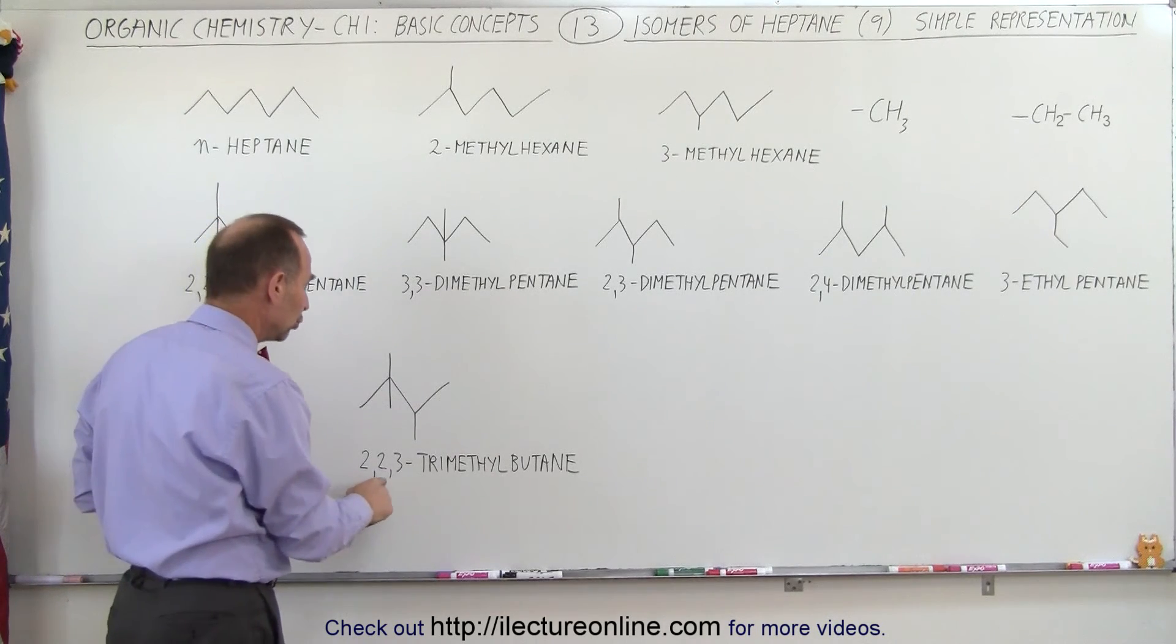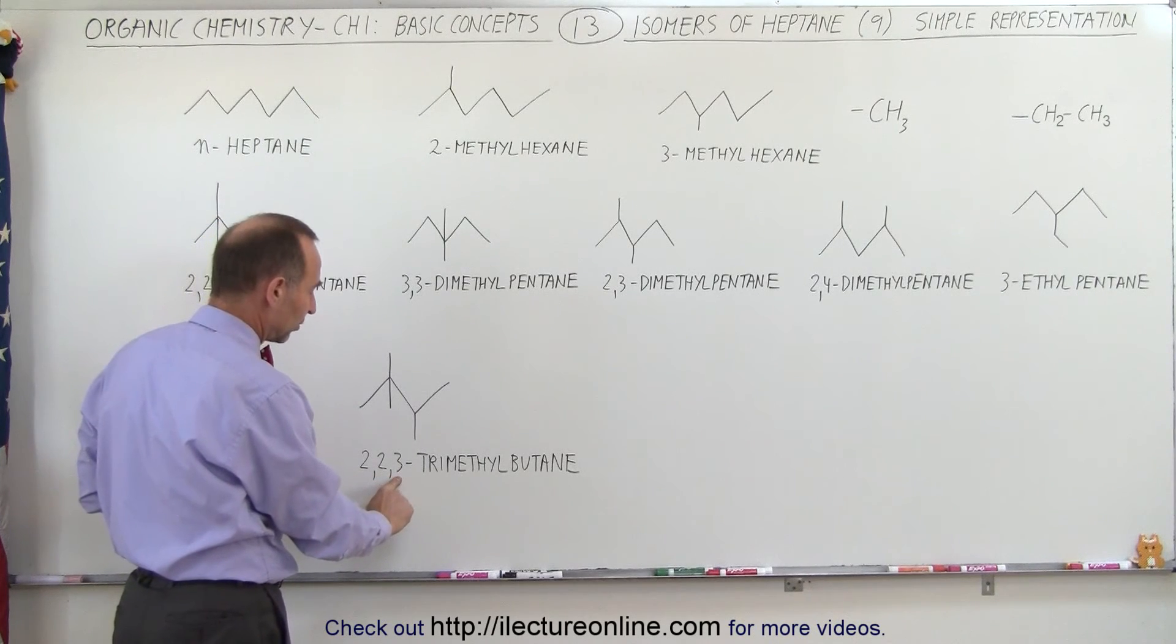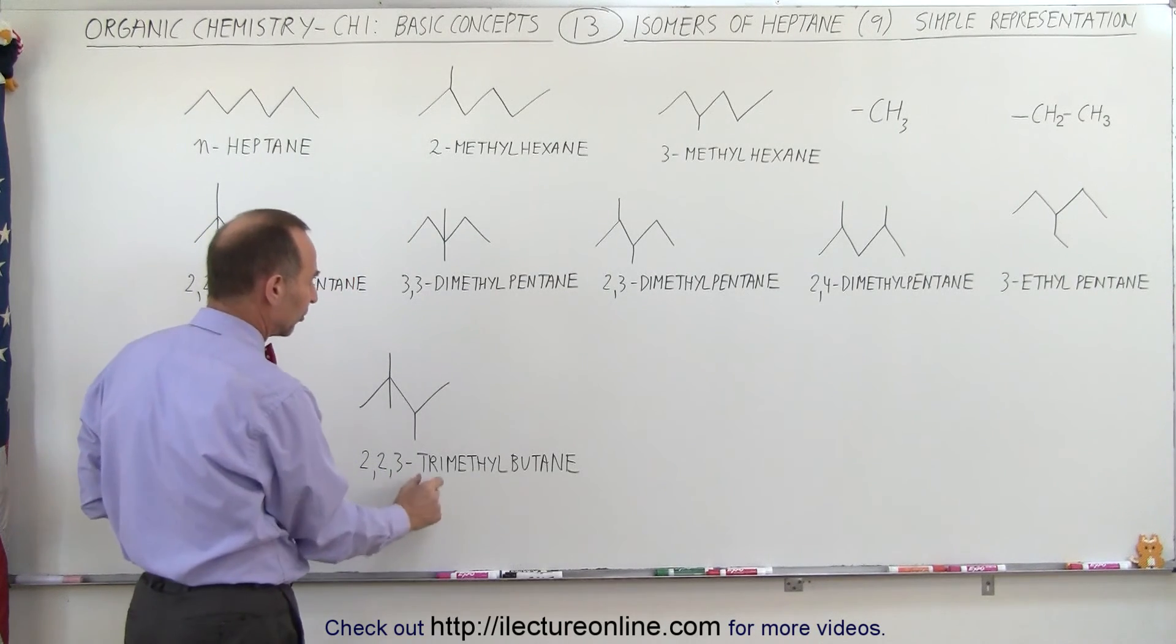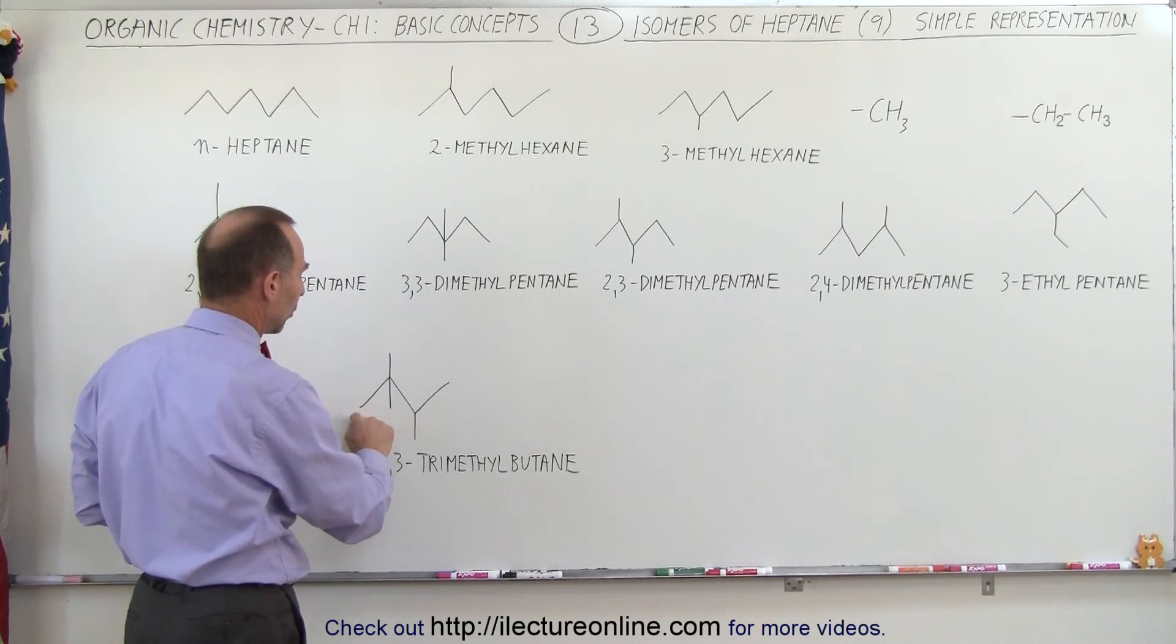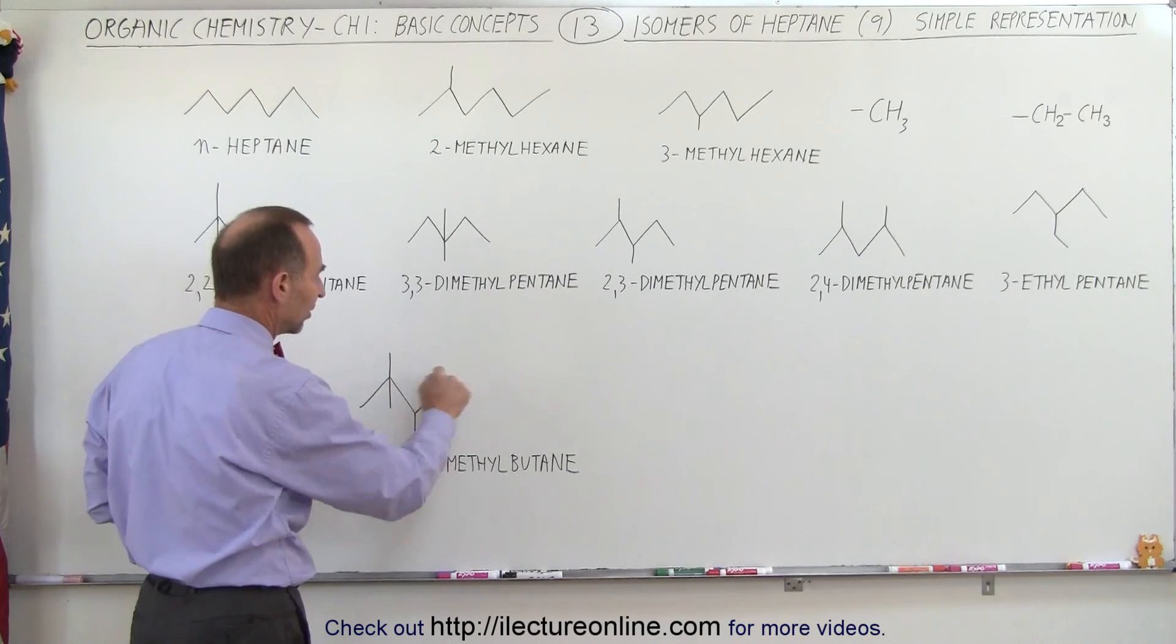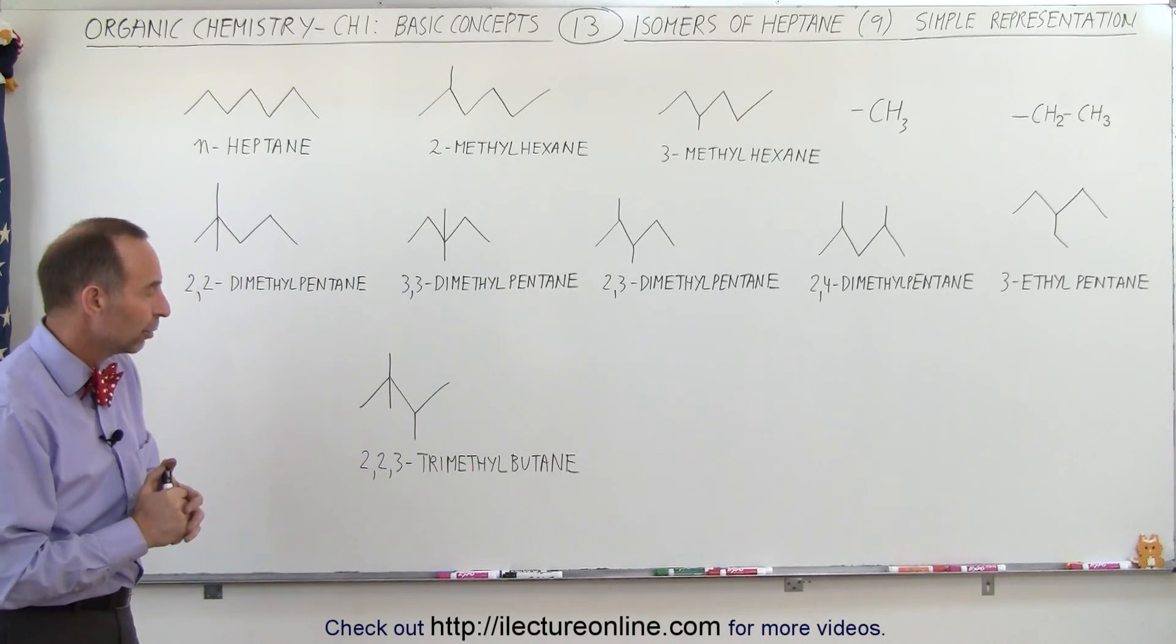And we have 2,2,3, meaning two of them are connected to the second carbon, one is connected to the third carbon. Tri-methyl, because there's three methyl groups. Butane, because now there's only 1, 2, 3, 4 carbons left in the linear chain, and so that's why it's called 2,2,3-trimethylbutane.